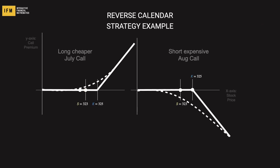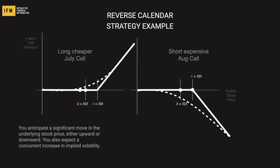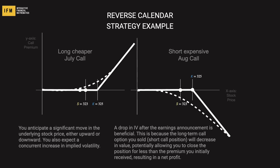Let's now examine an example of a reverse calendar spread strategy using call options. Imagine we're in an earnings season and you anticipate a significant move in the underlying stock price, either upward or downward. You also expect a concurrent increase in implied volatility before earnings and a subsequent implied volatility drop. This forecast is uncertain — the stock price could swing in either direction. This situation is ideal for setting up a reverse calendar spread. A drop in IV after the earnings announcement is beneficial, because the long-term call option you sold will decrease in value, potentially allowing you to close the position for less than the premium you initially received, resulting in a net profit.